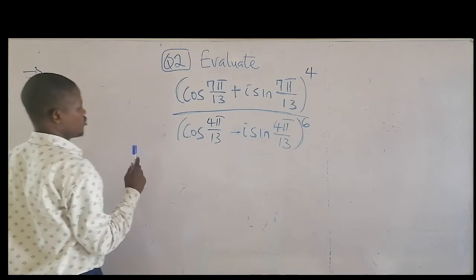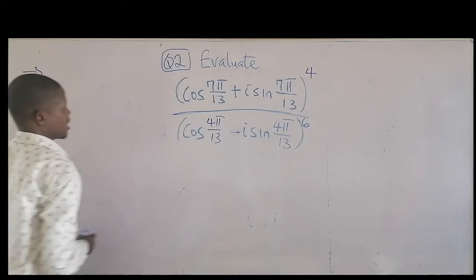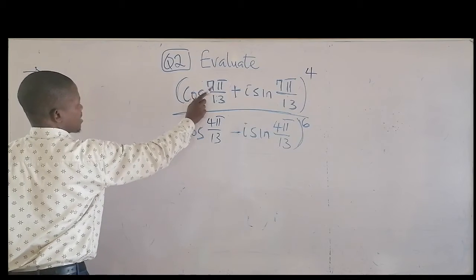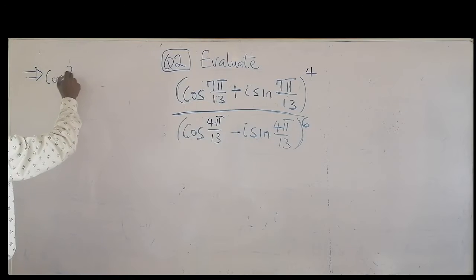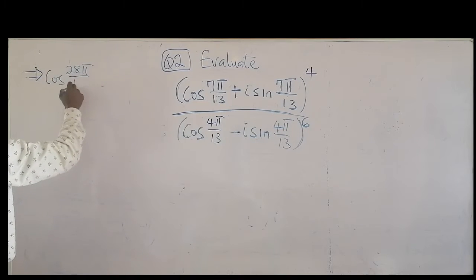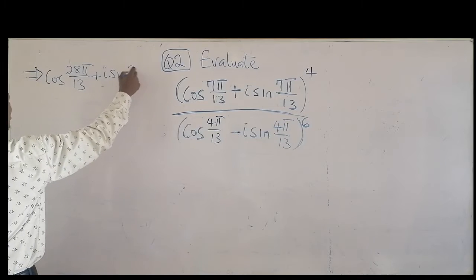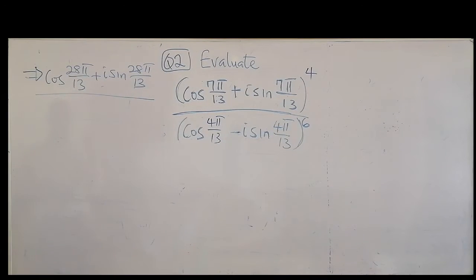The first thing we need to do is turn this sign here to plus. We won't be dividing straight away. Times 4, times 4. So we have cosine 38 pi over 13 plus i sine 38 pi over 13. So I'm through with the numerator.